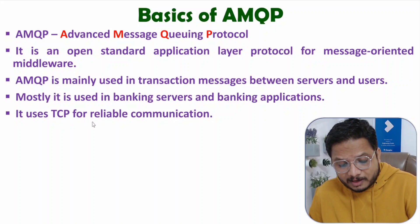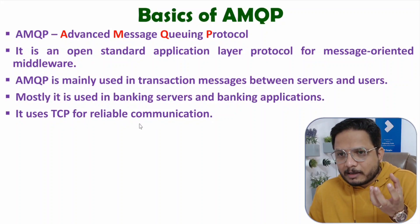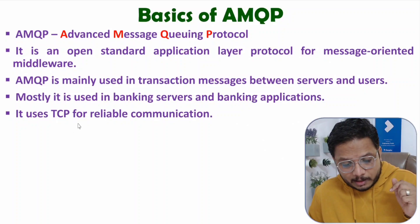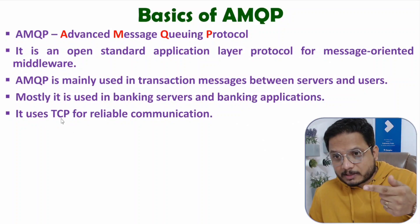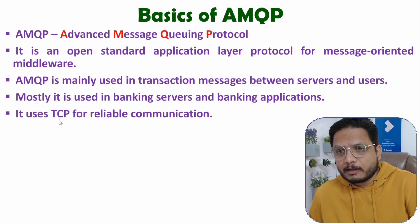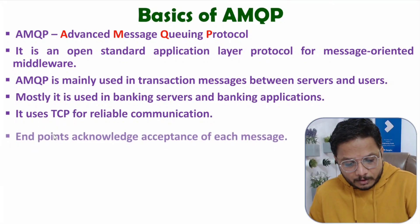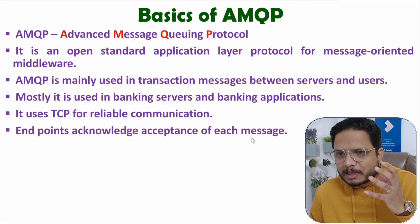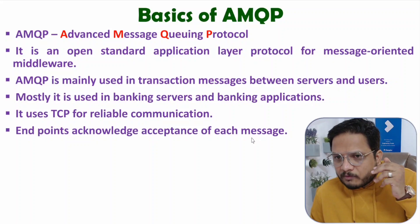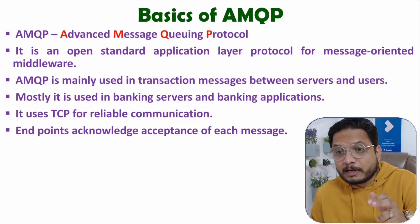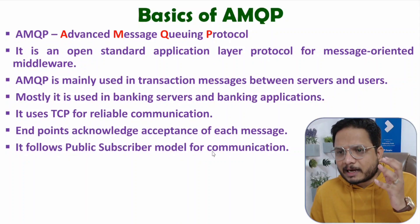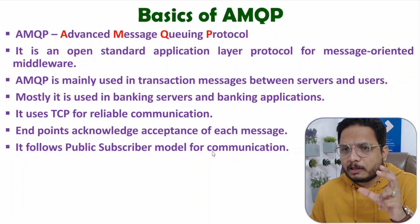AMQP uses TCP for reliable communication. TCP is a connection-oriented protocol functioning at the transport layer, so TCP is used for transportation of messages. Endpoints acknowledge acceptance of each message, so reliable communication is happening — for every forwarded message there will be an acknowledgement. AMQP follows a publish-subscribe model for communication.